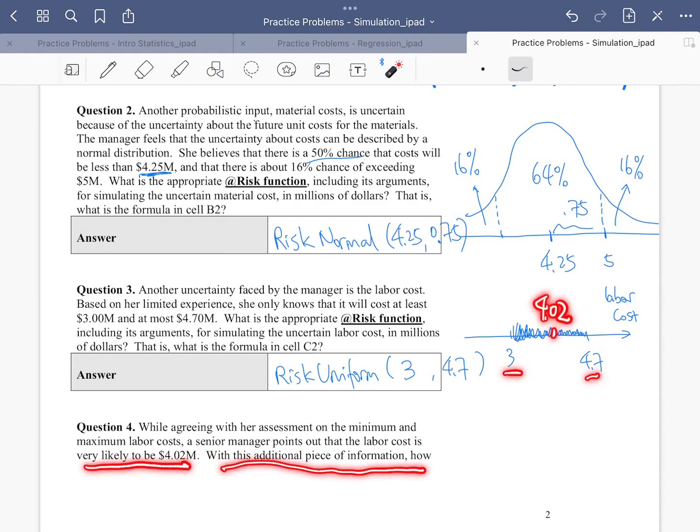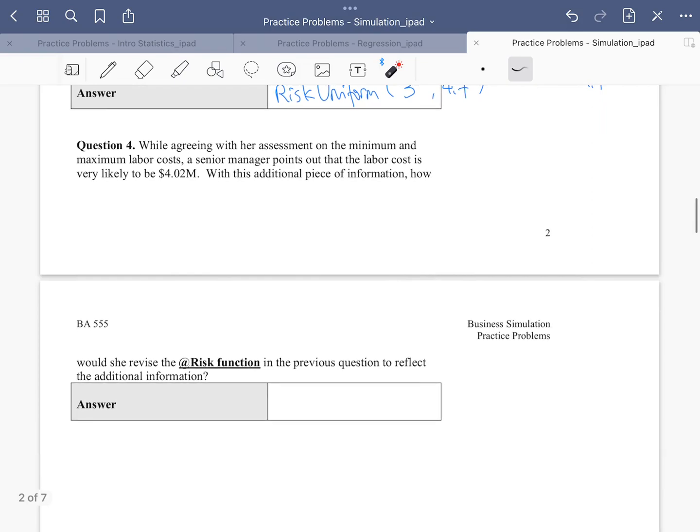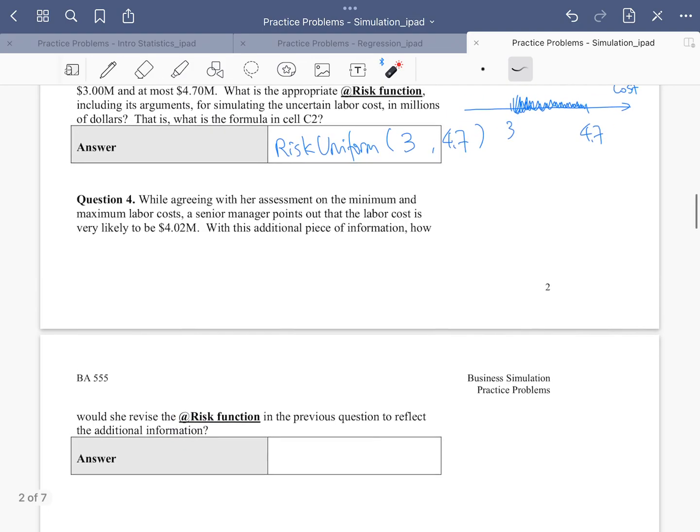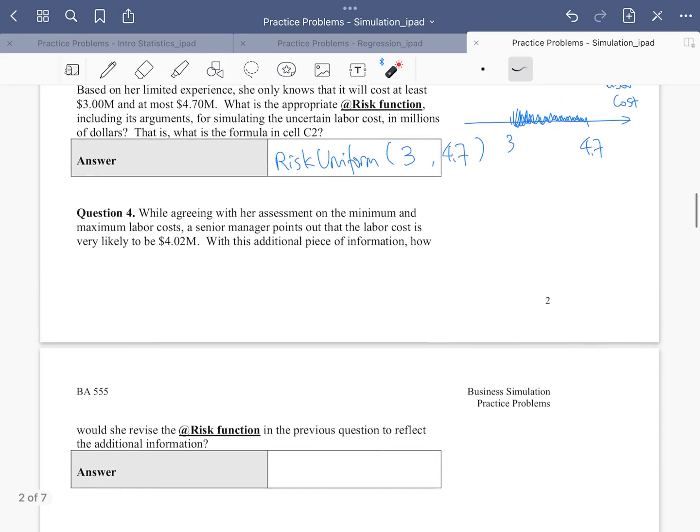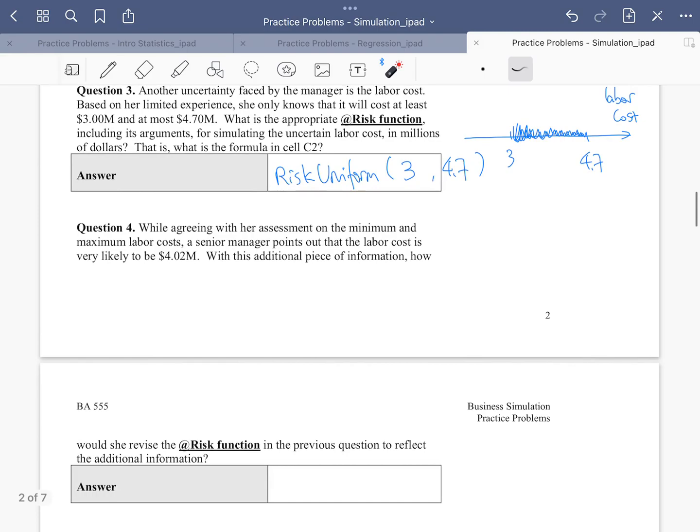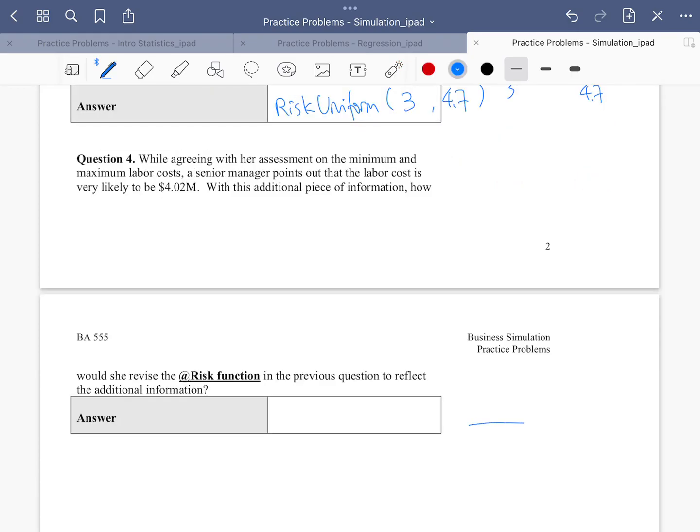With this additional piece of information, how would she revise our risk function in part three? So there's one very important piece of information we have right now. Besides we know the minimum is 3 and maximum is 4.7, there's actually a very likely value somewhere in the middle, which is 4.02. Let's draw it again.